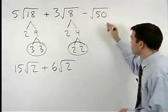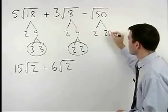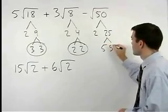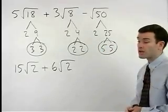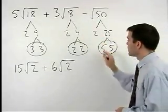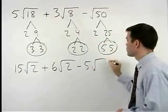In the last term, 50 factors as 2 times 25, and 25 is 5 times 5. So a 5 comes out of the radical, and we have minus 5 times the square root of 2.